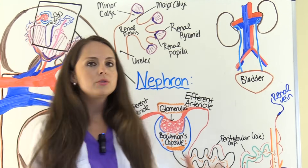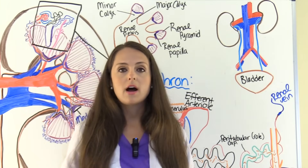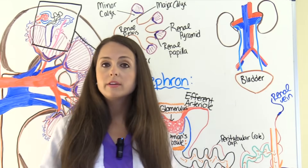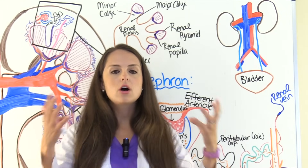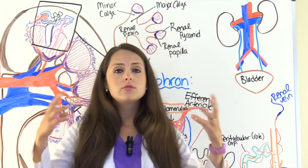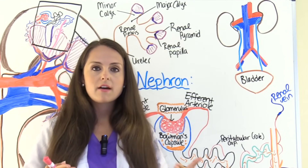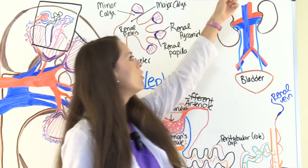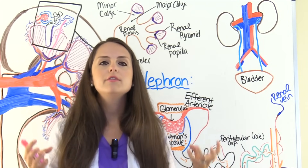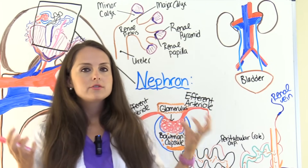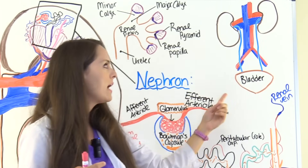Now, what do our kidneys do? They are very, very important in our survival. Just like with the heart — we've learned that the heart will take our blood and pump that fresh oxygenated blood it received through the lungs throughout the body. Well, the kidneys receive that fresh blood through the renal artery, and it will take that blood and filter it. After it filters and takes what it needs, it will send it back through the renal vein.